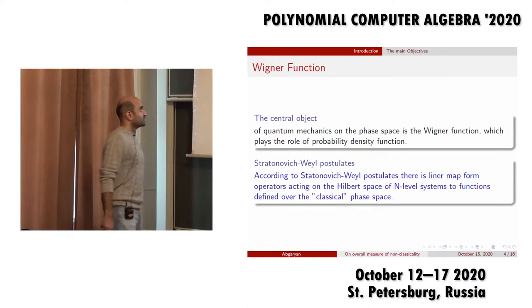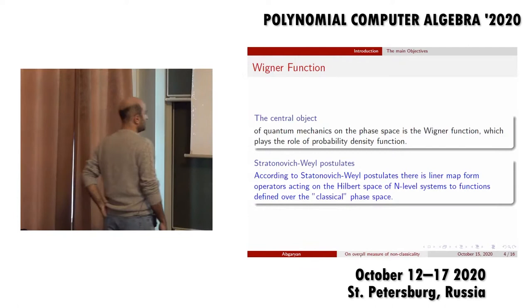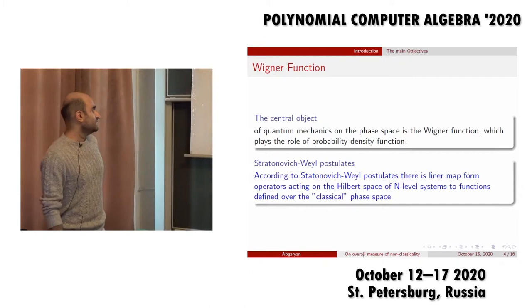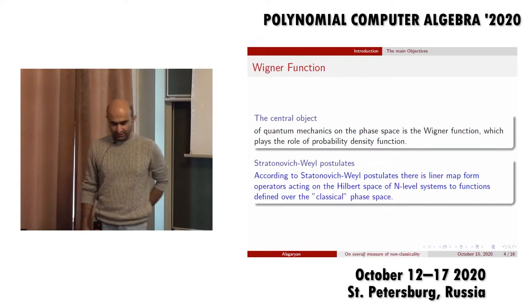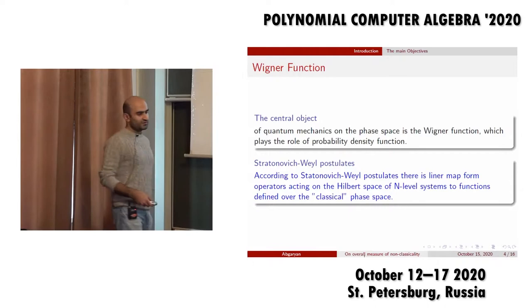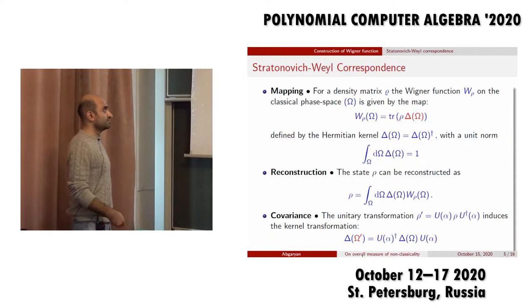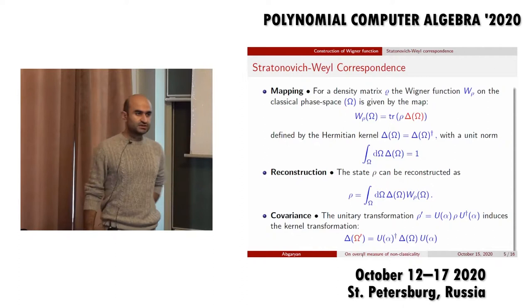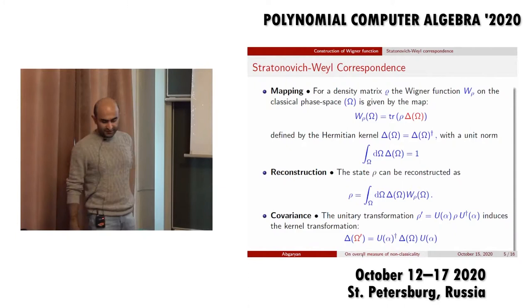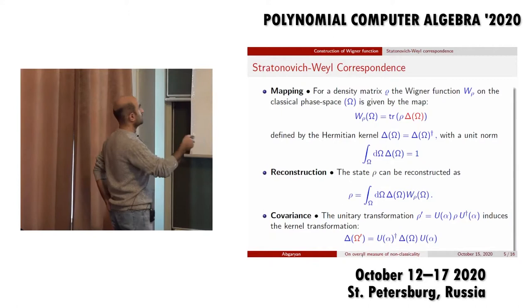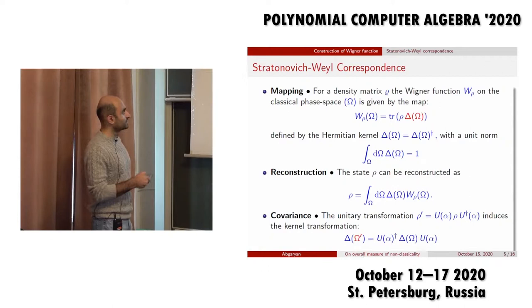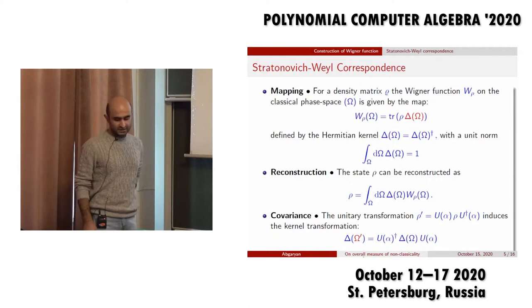The central object of the phase space interpretation of quantum mechanics is the Wigner function. After Wigner introduced his function for infinite dimensional quantum systems, in the 1950s, based on Weyl-Wigner mapping, Stratonovich developed a theory of how to describe quantum systems over state space in the finite dimensional case. He introduced physically motivated postulates on how this mapping from operators acting on Hilbert space to functions defined over phase space should work. The mapping has to be linear, and for a physical system described by density matrix ρ, it takes the form involving the kernel Δ, called the Stratonovich-Weil kernel.